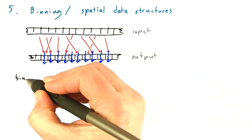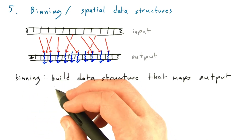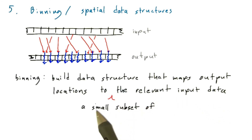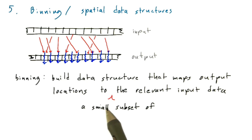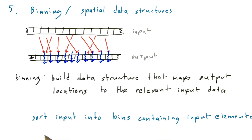And we're going to call this binning. Binning is when you build a data structure that maps output locations to the relevant input data. This works best when you're mapping the output locations to a relatively small subset of the input data. Stratton and company call the creation of this data structure binning because it often reflects a sorting of the input into bins that represent a region of space containing those input elements that are relevant.